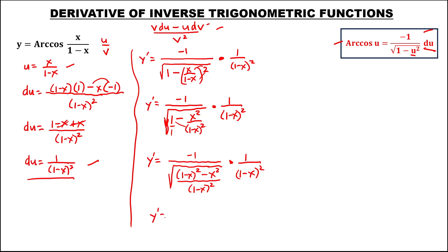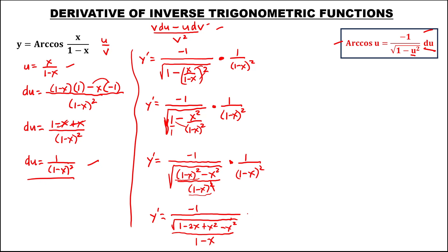Then we have y prime equals negative 1 over the square root — we can expand this 1 minus x to the power 2 — so this equals 1 minus 2x plus x squared, then bring down negative x squared, then over — because we can take the square root of 1 minus x to the power 2 — just cancel this squared so outside the radical, this becomes 1 minus x, then times 1 over the quantity of 1 minus x, to the power 2.